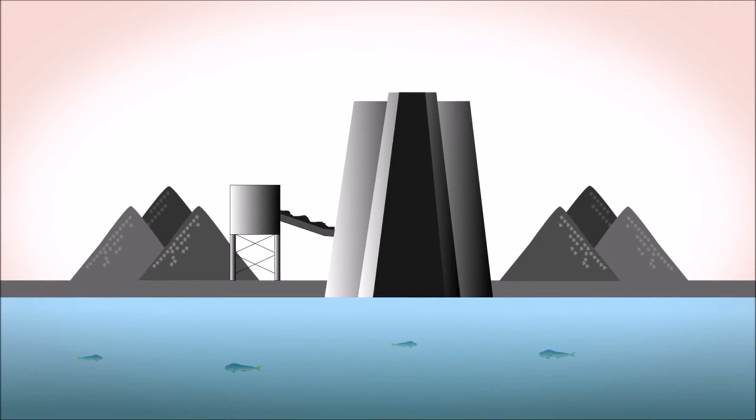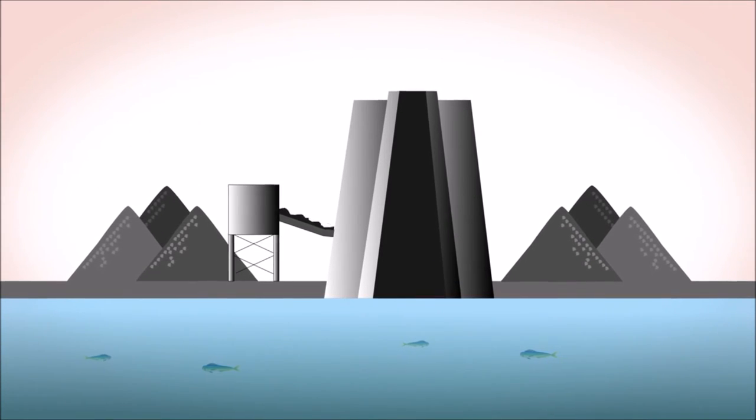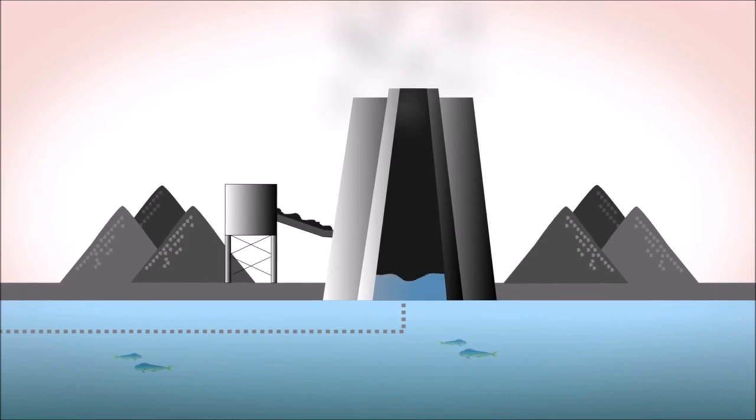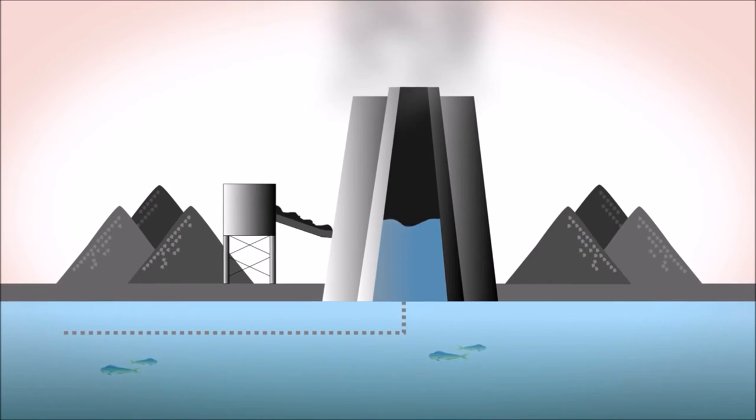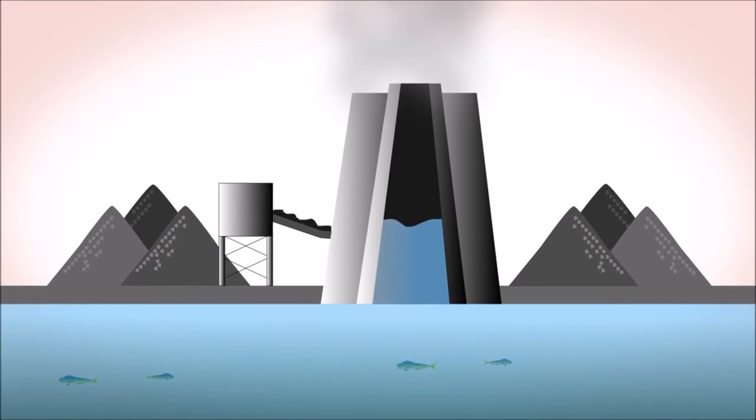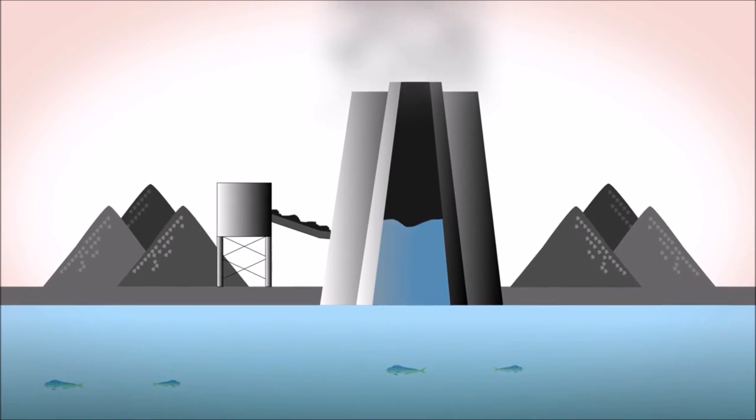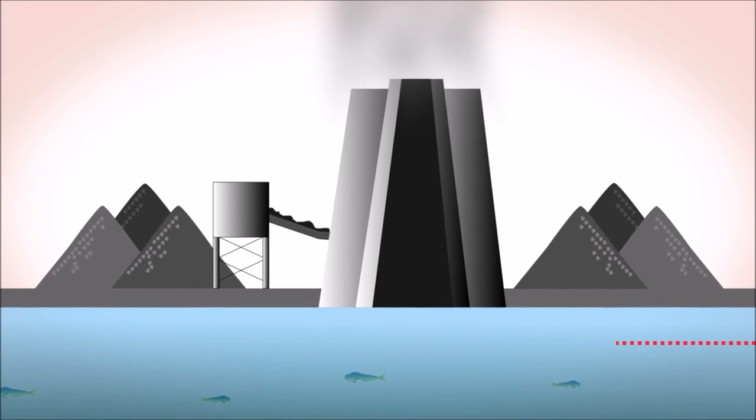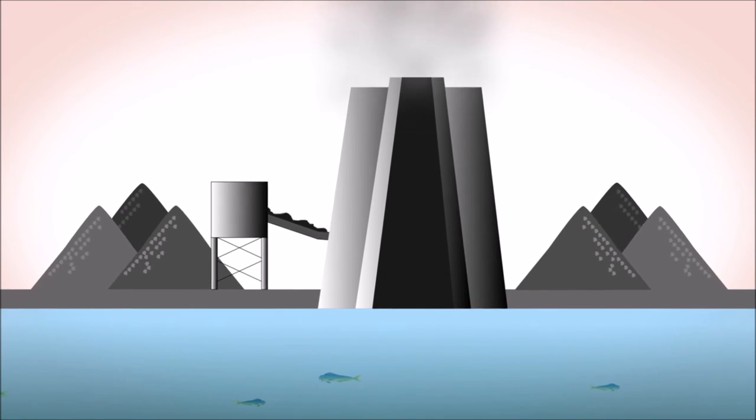Fossil fuel and nuclear power stations need large amounts of water for condensing the steam which drives their turbines. This water is usually cooled on site in the great cooling towers that dominate the skyline of power stations. Even so, the water will be returned to the river or sea warmer than before, and this can upset the river or sea ecosystems.